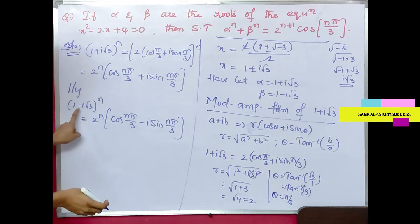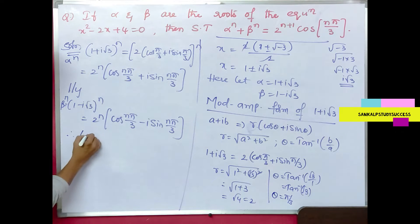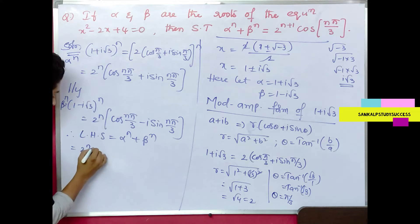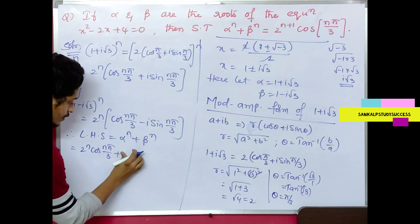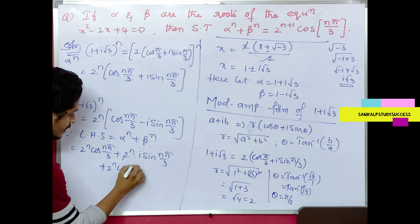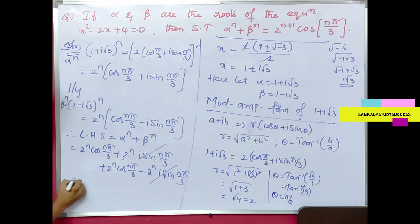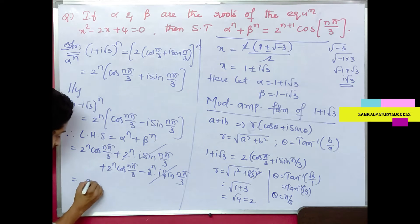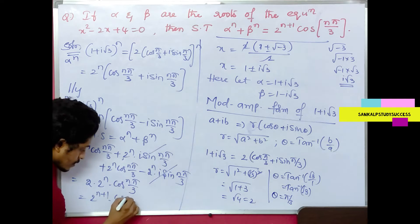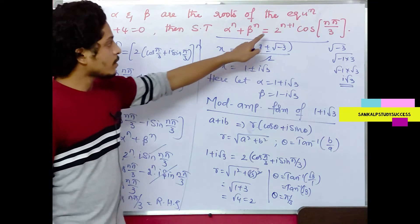Similarly, β^n = 2^n(cos(nπ/3) - i sin(nπ/3)). So LHS = α^n + β^n = 2^n(cos(nπ/3) + i sin(nπ/3)) + 2^n(cos(nπ/3) - i sin(nπ/3)). The imaginary terms cancel, giving 2 · 2^n · cos(nπ/3) = 2^(n+1) · cos(nπ/3), which equals RHS.